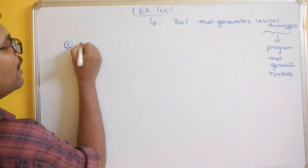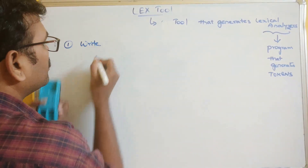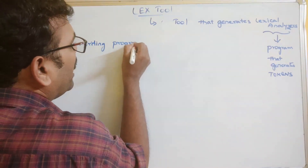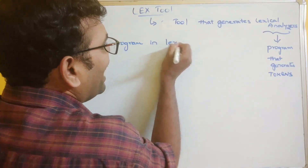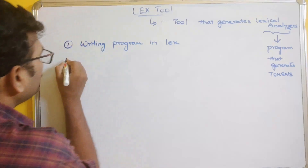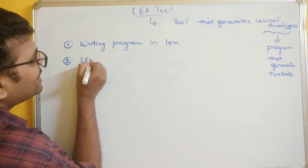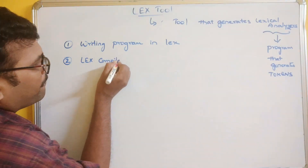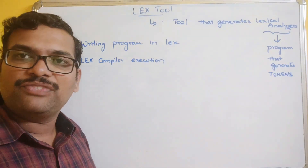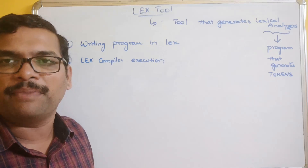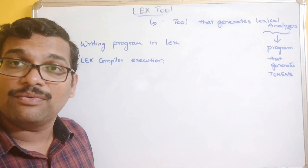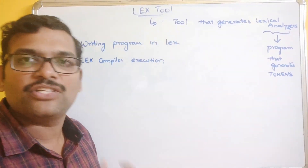To use LEX, the first step is writing a program in the LEX language. Similar to C, there is a language called LEX language. The second step is LEX compiler execution - we use the LEX compiler to convert the program written in LEX to C.